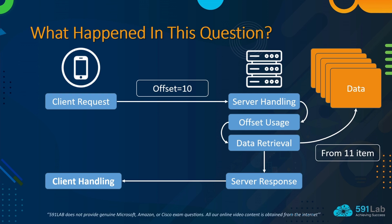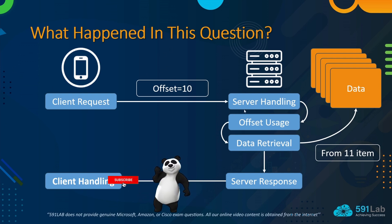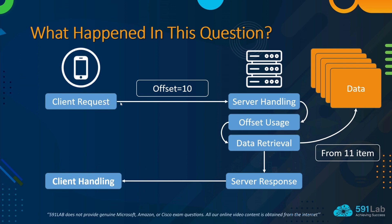The key point is: if we use offset in our client's request and there is no error in the HTTP visit sequence, the server will respond to the client with status code 200 — the normal status code meaning correct connection, correct actions, and correct data. But in this question, the client gets status code 429, so offset is not the correct answer. Option A is not right.